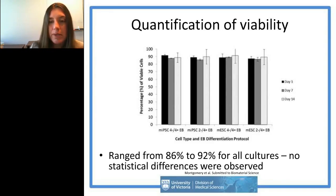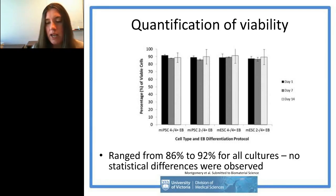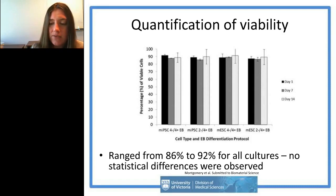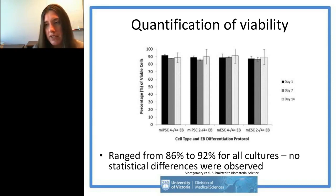We quantified viability using a Guava flow cytometer with a ViaCount assay. Day 1 corresponds to the end of each protocol, and days 7 and 14 are extended cultures when we place cells inside our biomaterial scaffolds. Cells maintained high levels of viability throughout this whole process, which is quite promising especially as we hope to someday use these biomaterial scaffolds as a scaffold for transplantation.